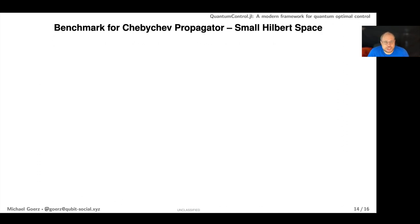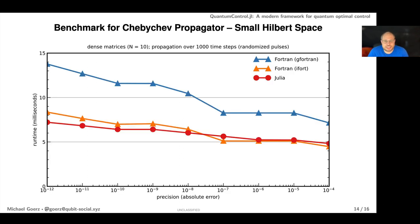What if you go to really small Hilbert spaces? It actually looks quite similar—this is for a Hilbert space dimension of 10. Julia matches the performance of Fortran with ifort, but then there's a Julia package called StaticArrays where the compiler knows the size of the arrays and guarantees that the arrays are stack allocated. This is something very specific to Julia. Again you get an additional factor of two just by switching out the data structure.